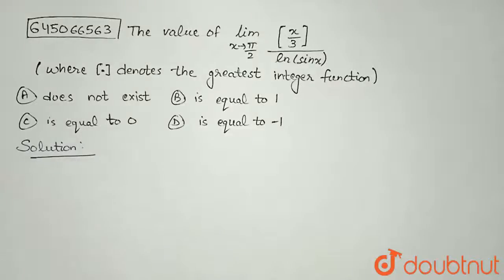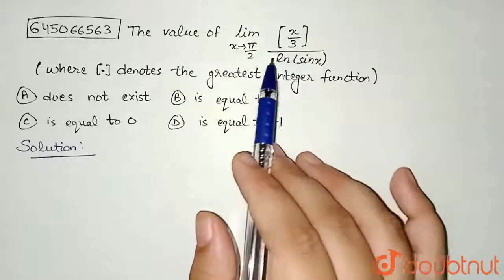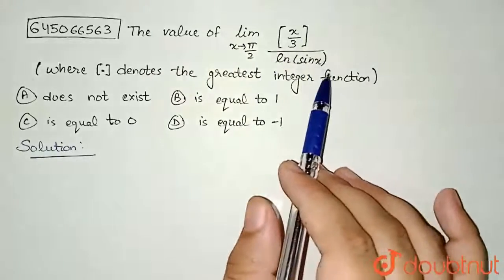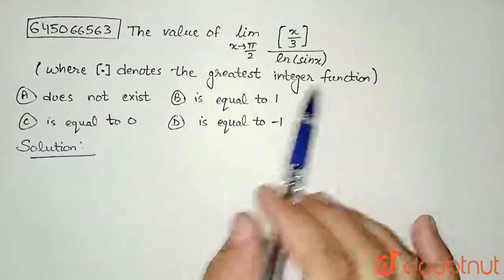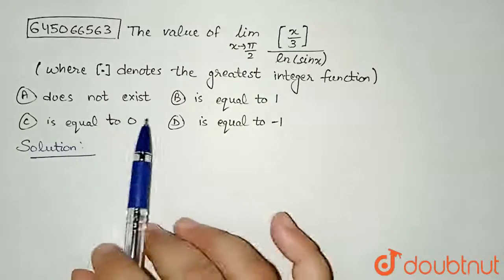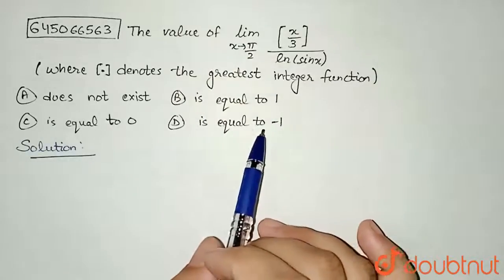Hello everyone. The question is: the value of limit x tends to π/2 of [x/3] divided by ln(sin x), where [] denotes the greatest integer function. The four options are: (A) does not exist, (B) is equal to 1, (C) is equal to 0, and (D) is equal to -1.